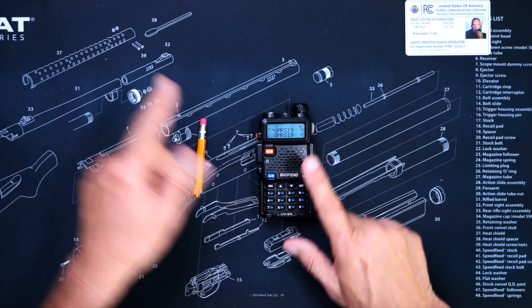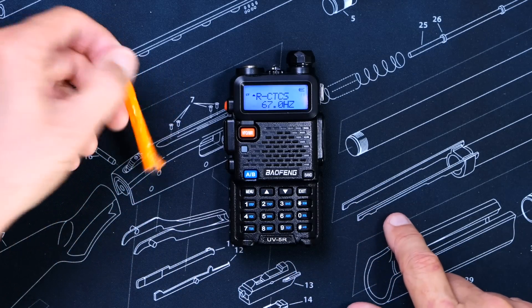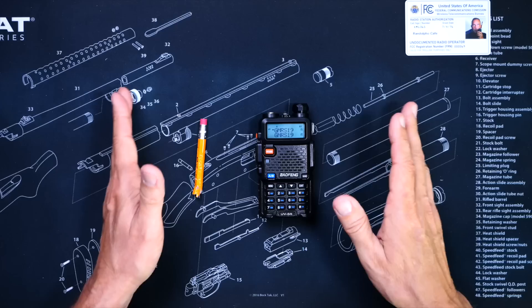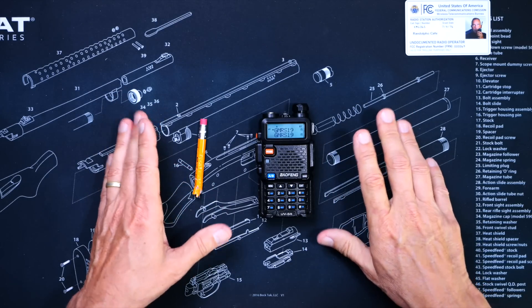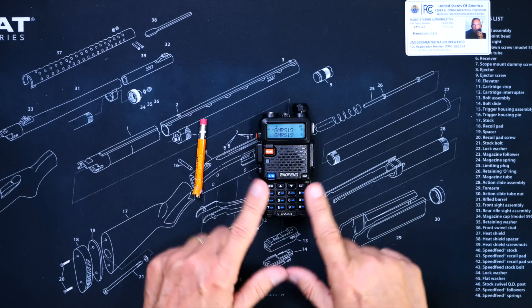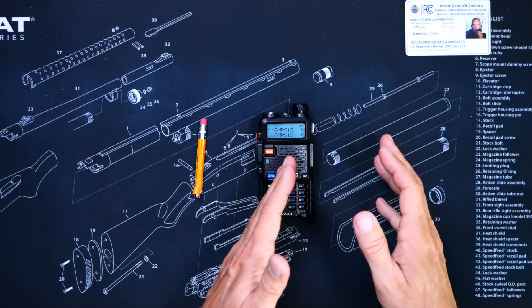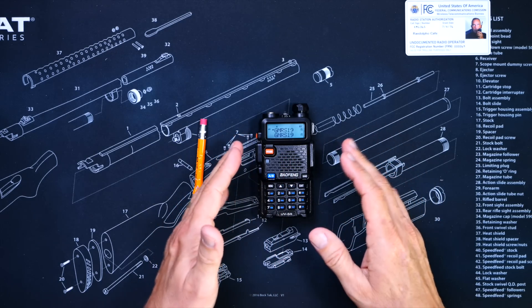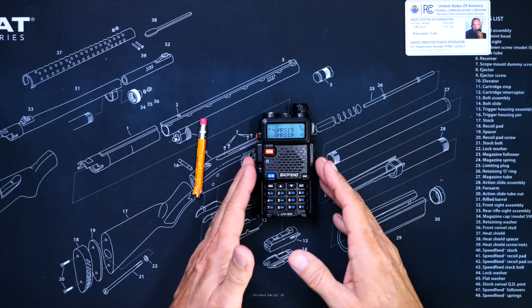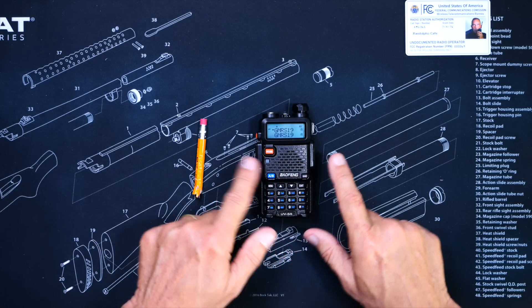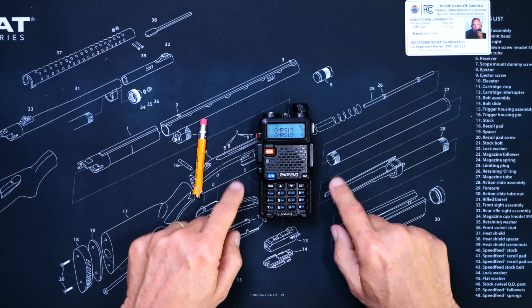CTCSS tone, DTC, DCS, DPL, or any kind of receive tone or code set on it, then it will not hear any other radios unless and until you go into the settings on the transmitting radio and set that same transmit tone, or go into the receiving radio and remove the receive tone.